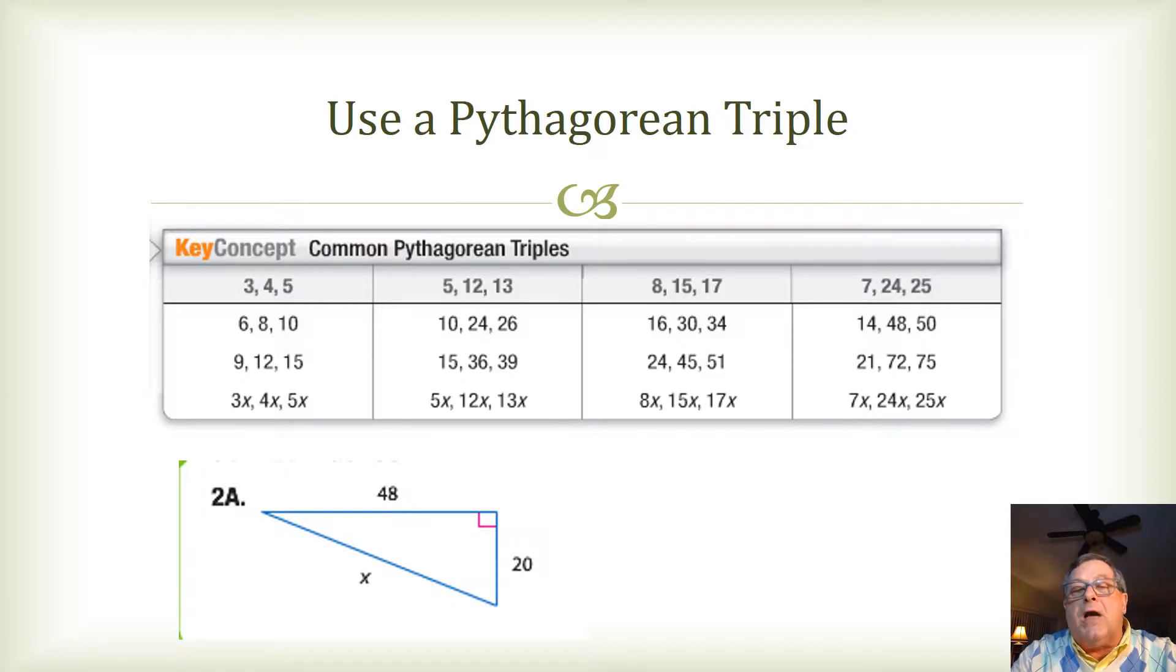And there are some common Pythagorean triples. And one, of course, is the one that I just mentioned, which is 3, 4, 5. And, of course, 5 would be the hypotenuse. And any multiple of that would fit that Pythagorean triple.